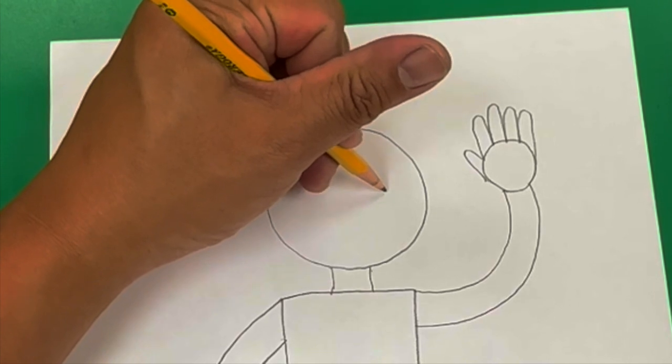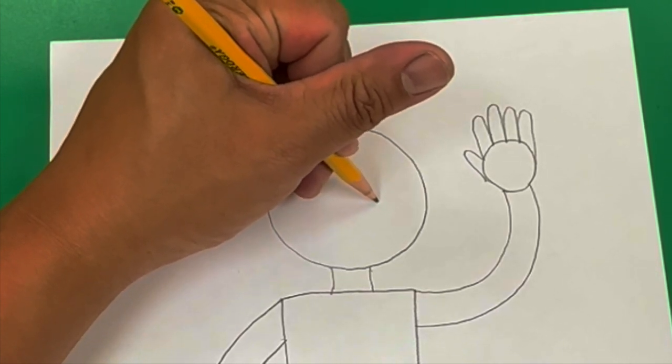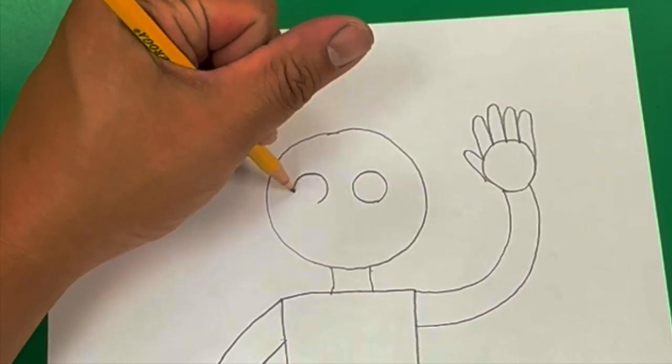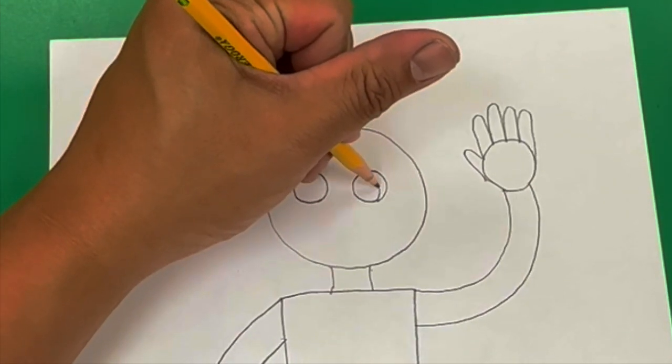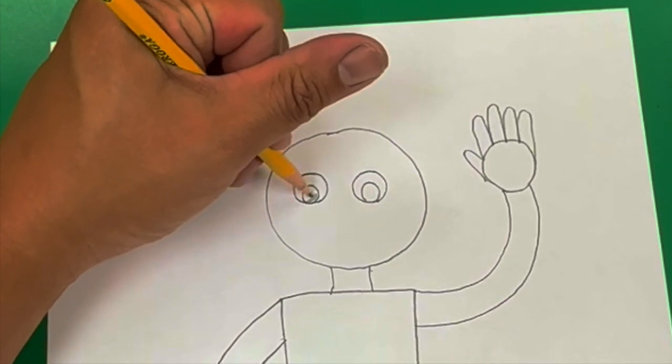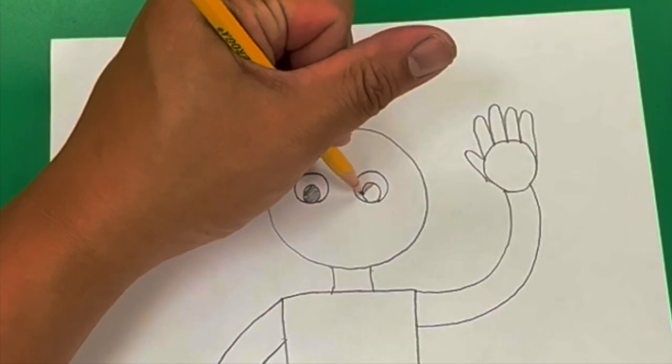Time for me to draw my face details. First, I'll start with the eyes. I'm still drawing basic shapes, so I'm drawing two circles, and within that circle, a smaller circle for the pupil of the eyes. I'm going to fill them in with my pencil.